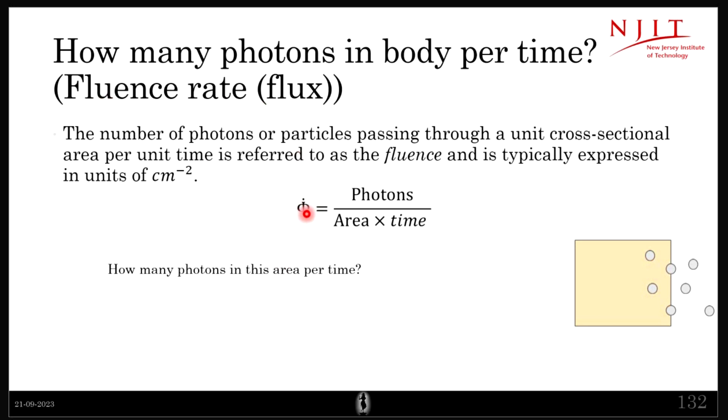There is a small dot over here that indicates differentiation. You differentiate fluence with respect to time and you get this. This tells you how many photons are there in a particular area per unit time.